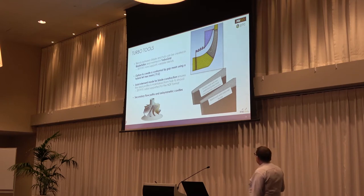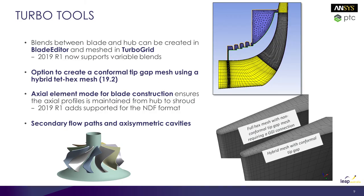Moving on to turbo tools. ANSYS has extremely good meshing for turbomachinery. A nice feature is that when you've got a return channel — which is really hard to get a hex mesh on — you can build that into a TurboGrid session and have conformal mesh joins with a good quality tetrahedral mesh through there.